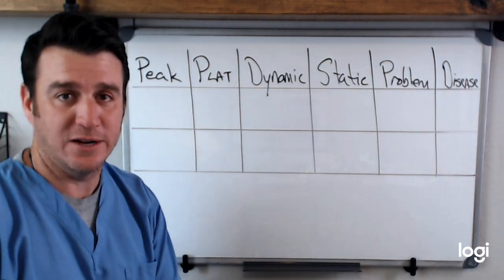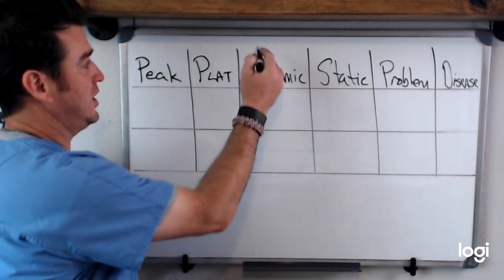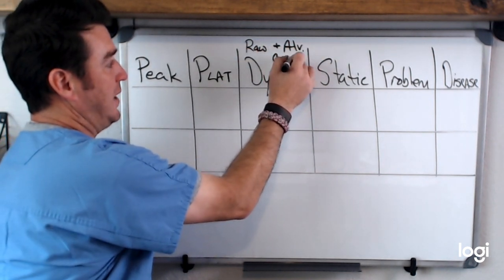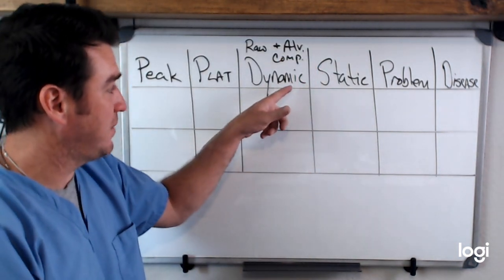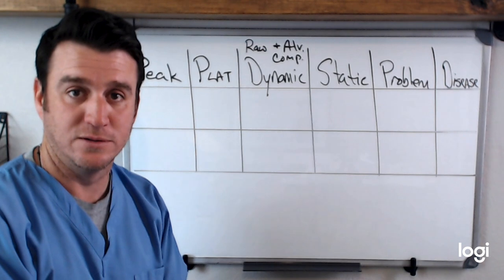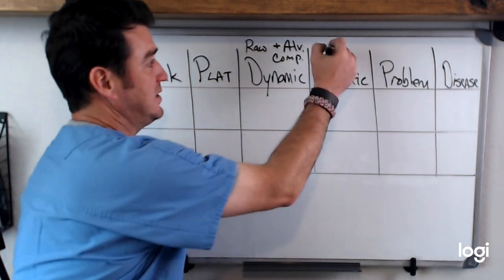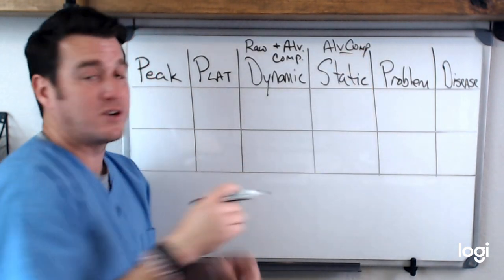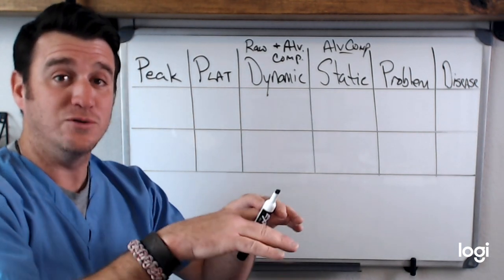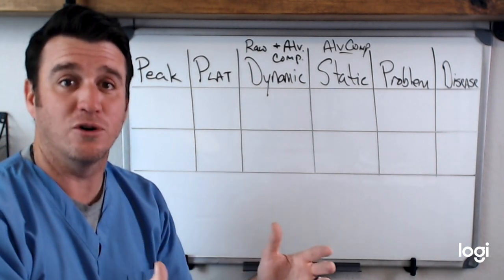When we talk about dynamic compliance, we're talking about our airway resistance and our alveolar compliance. That's important to understand because dynamic compliance is driven by — is the result of — air moving through the airways. So it is airway resistance and alveolar compliance. Now static compliance is a reflection of our alveolar compliance alone. This is when you do an inspiratory hold and get a static compliance measurement — there's no air movement, and it's just a reflection of alveolar compliance.